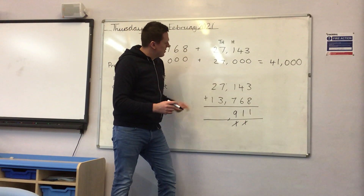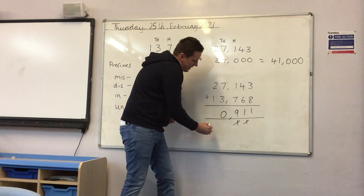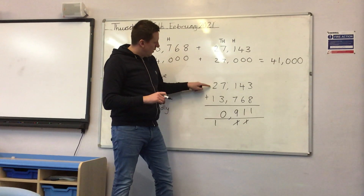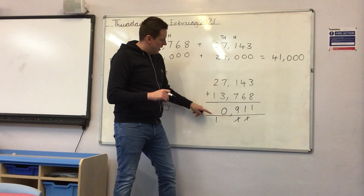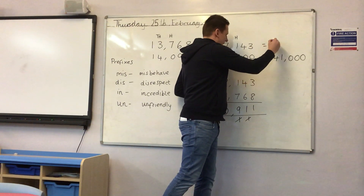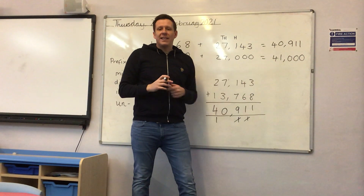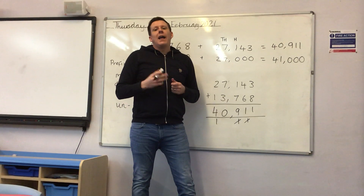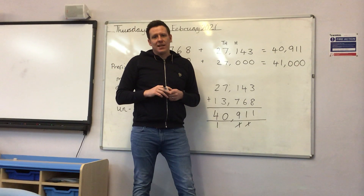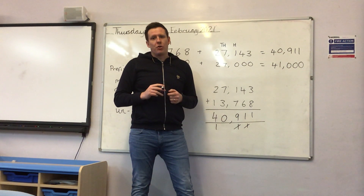Then moving on to my thousands: seven thousand add three thousand is ten thousand, so I'm going to put my zero in my thousands column and carry the one over to my ten thousands column. Twenty thousand add ten thousand, add another ten thousand, is forty thousand. So you can see that my answer of forty thousand, nine hundred and eleven is fairly close to my estimate. That's what we'd like you to do in Year 5— have a go at rounding in order to estimate and check the accuracy of your calculations. We've put a worksheet with some examples online on the School Spider.